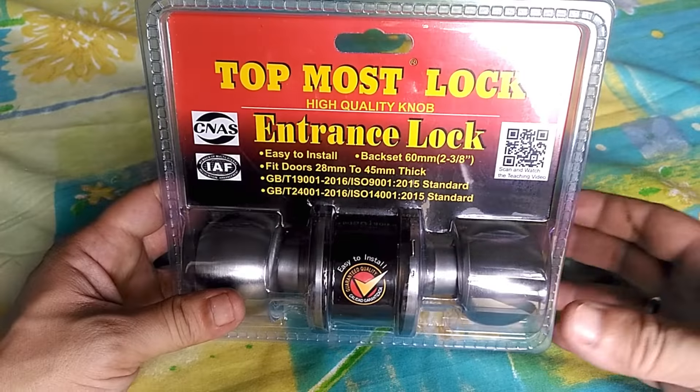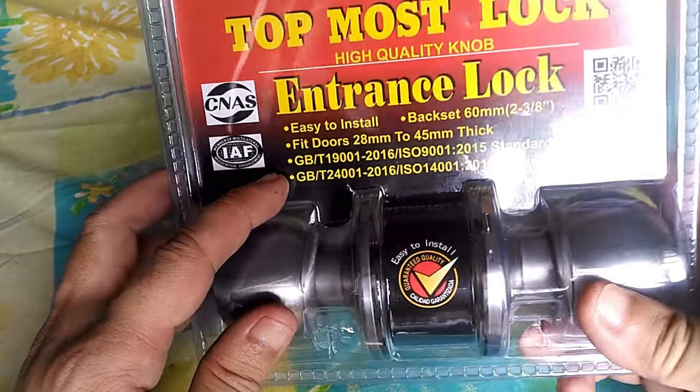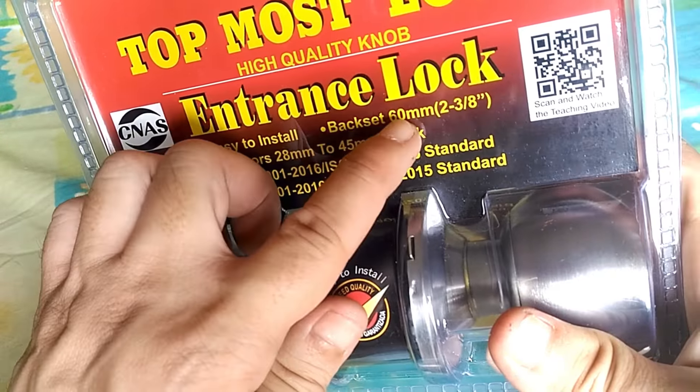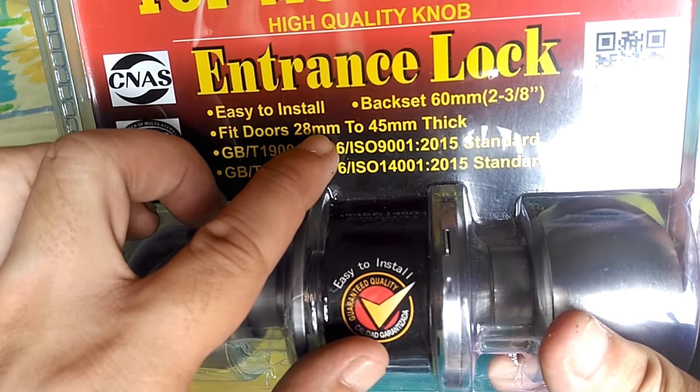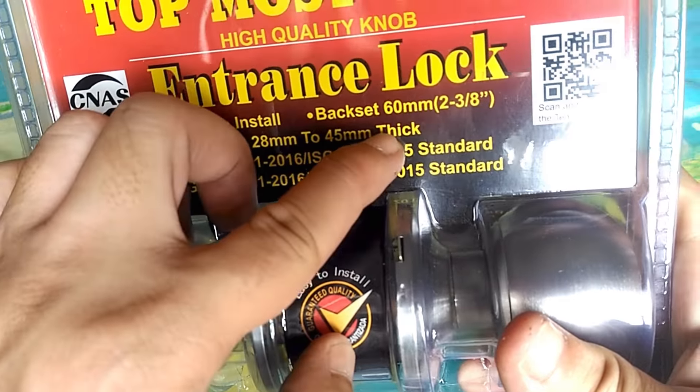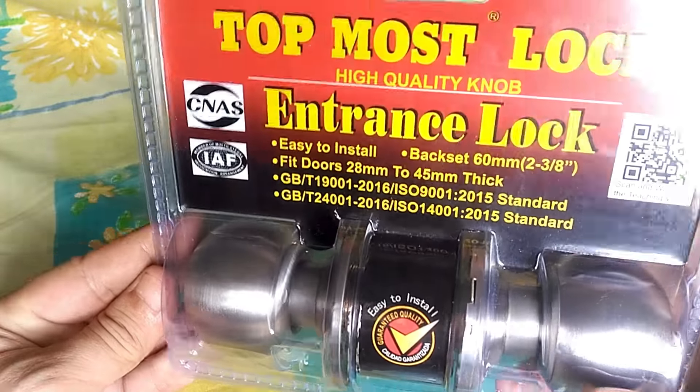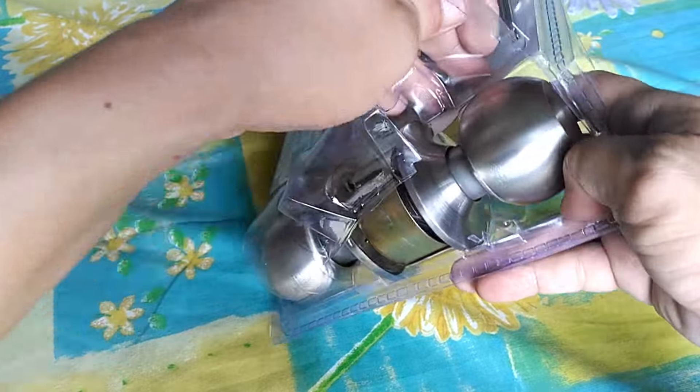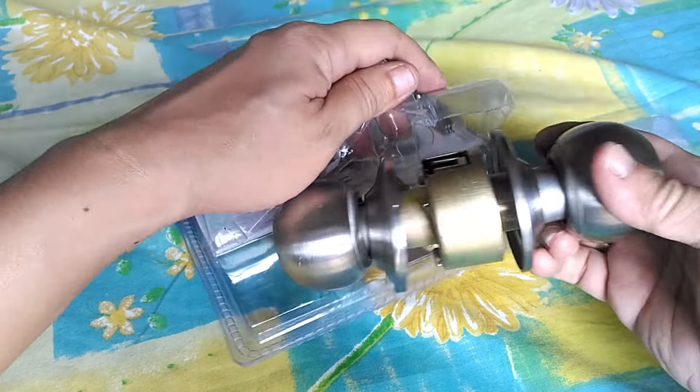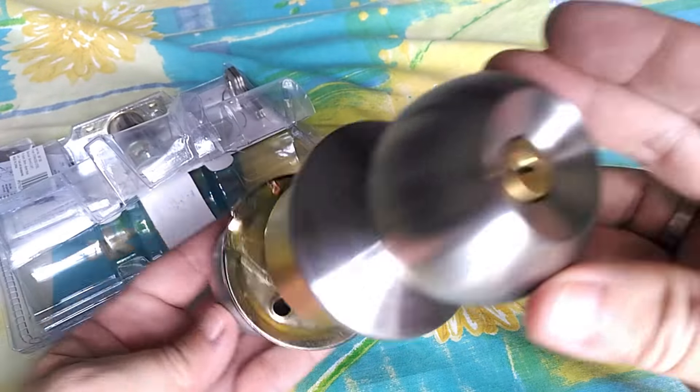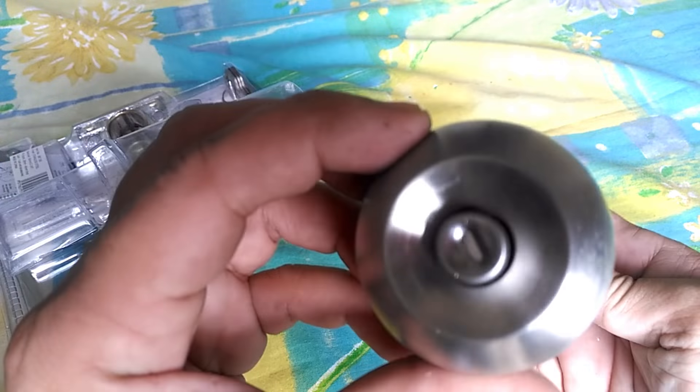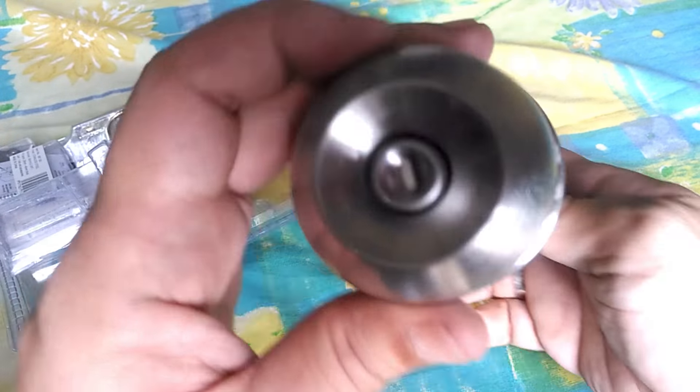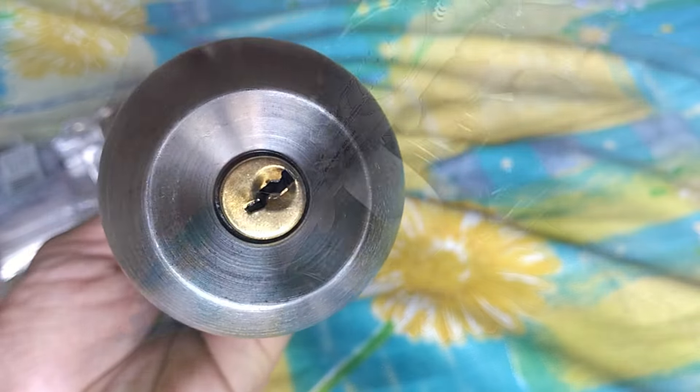So this new knob set I got has a back set of 60 millimeters, which is the diameter of the hole the knob goes through, and fits doors from 28 millimeters to 45 millimeters thick. So my 43 millimeter door is well within that range. Let's open this up and check what's inside. First you have the cylindrical body where several parts are attached. The outside knob with the keyhole, the inside knob with the lock, the inside and outside rose, and mounting plate which we will all cover in depth later.